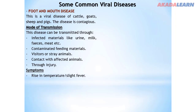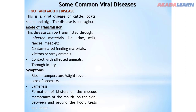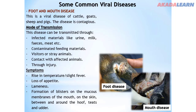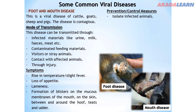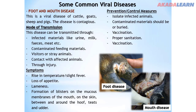Symptoms of foot and mouth disease: rise in temperature or slight fever; loss of appetite; lameness, because there will be wounds within the foot; and formation of blisters on the mucous membrane of the mouth, on the skin between and around the hooves. Prevention and control: isolate infected animals; bury contaminated materials; carry out proper sanitation; and ensure vaccination — vaccination is strongly emphasized as very important.